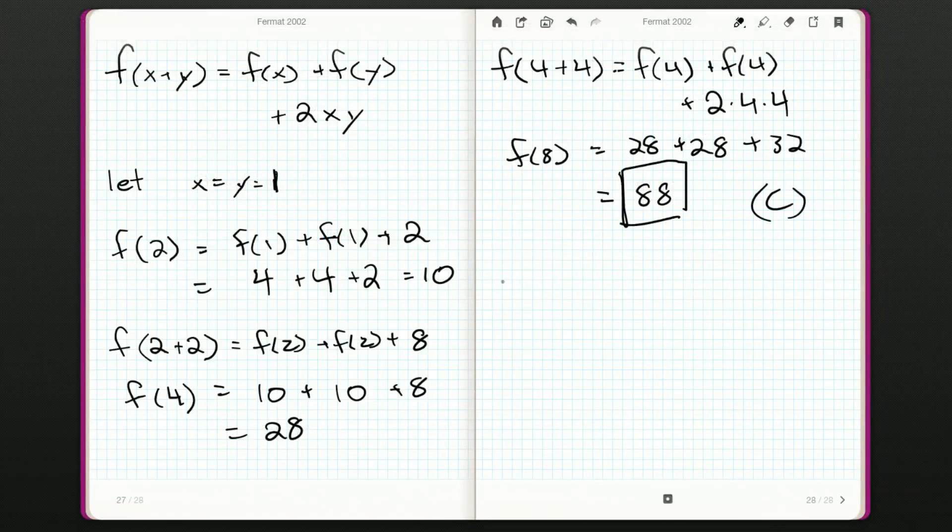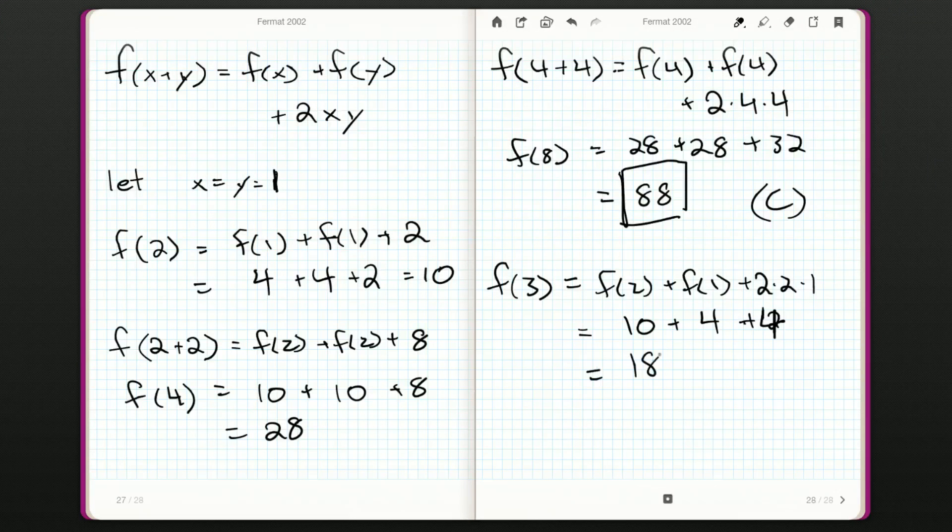Now of course, as I said, you could go the long route and do f of 3 is f of 2 plus f of 1 plus 2 times 2 times 1, and that would be fine. It's going to be long, but f of 3, for example, is 18. And then we do 18 plus 4 plus 2 times 3 times 1, so we do get 28. So this function really does work.